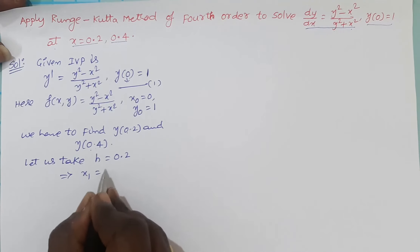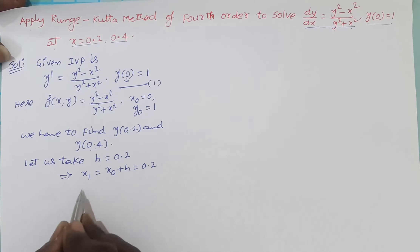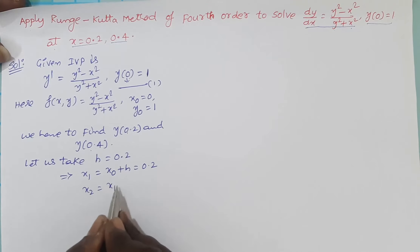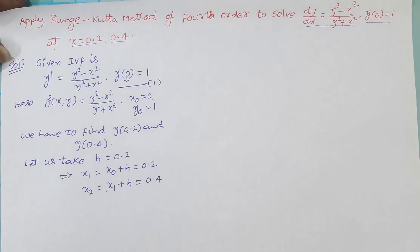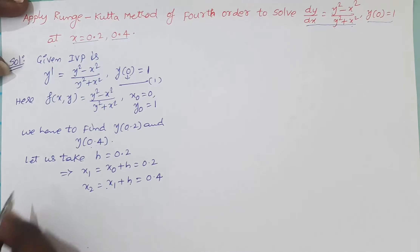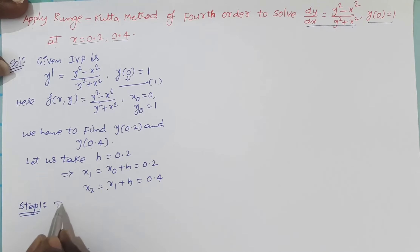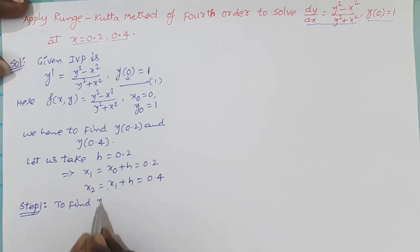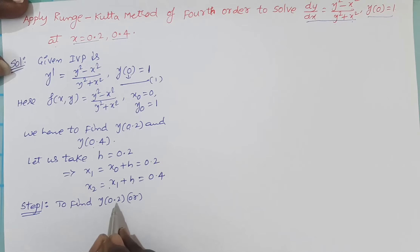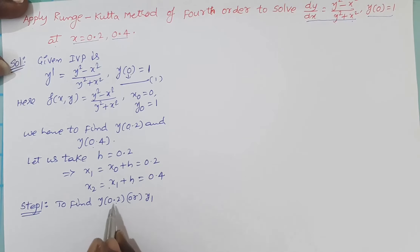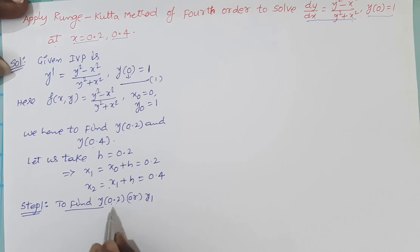Automatically x₁ becomes x₀ + h = 0 + 0.2 = 0.2, and x₂ = 0.4. Step 1: In this first step we are going to find the value of y(0.2). Another representation of y(0.2) is y₁, because 0.2 is nothing but x₁, so y at x₁ is y₁.